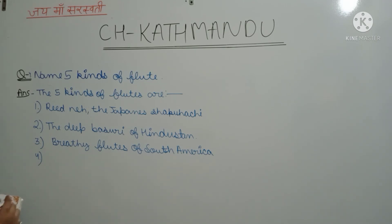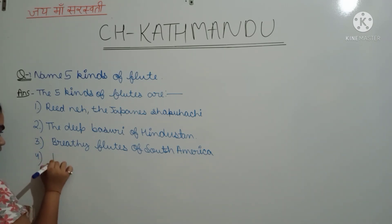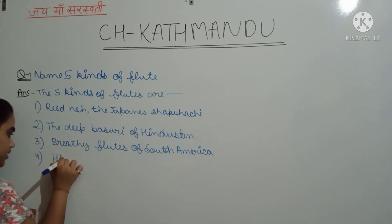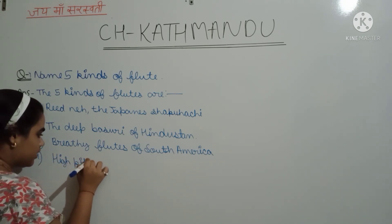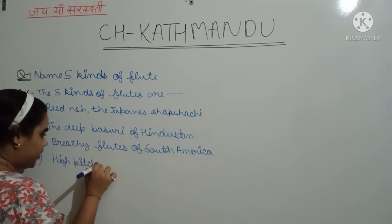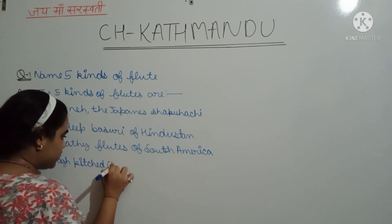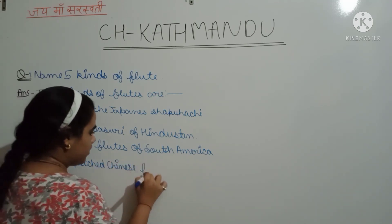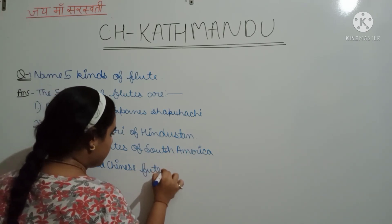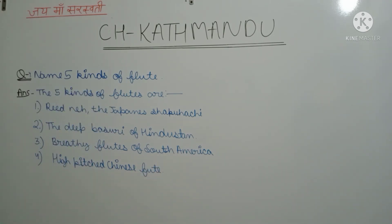The fourth and fifth — the high-pitched Chinese flute. This is the fifth flute name. These are the names of the five kinds of flutes mentioned in the chapter.